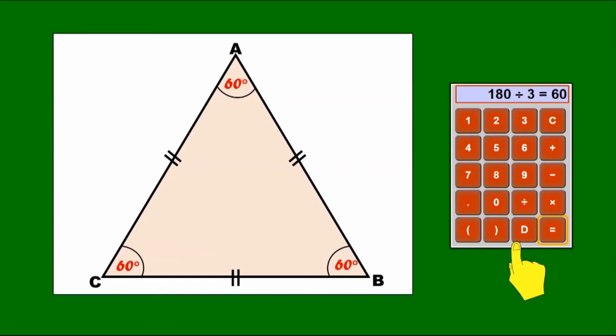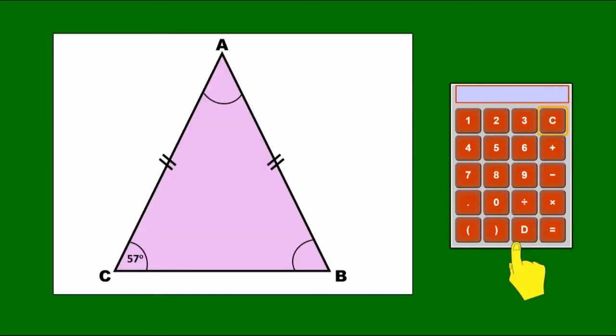Now this triangle is an isosceles triangle. That means two of its sides are the same length, and it also means the angles opposite the equal sides are the same size. So the angle at B must also be 57.